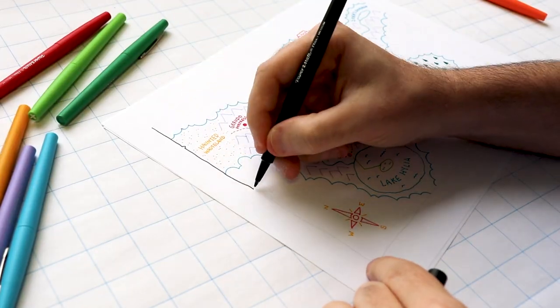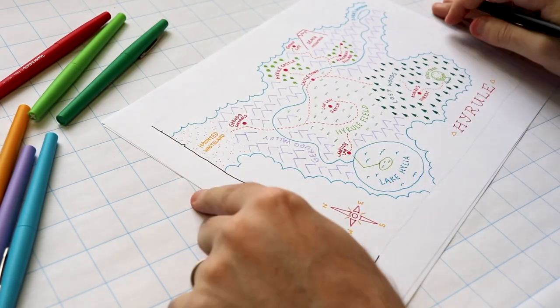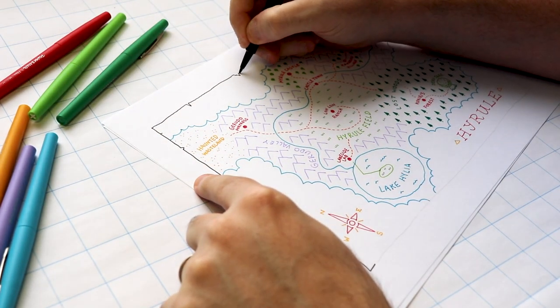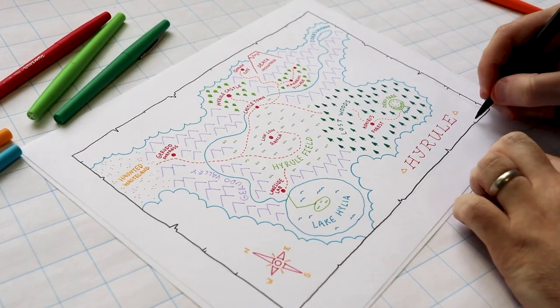With the black pen, I'm going around the outside and drawing a simple border. Just a straight line with a few chunks taken out so it looks like a map. Like an actual sheet of paper map that Link would find on his adventure.